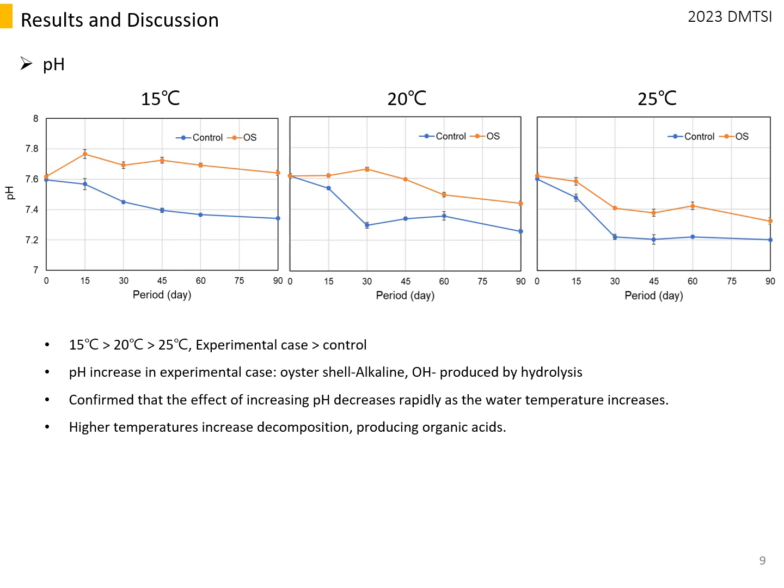In this study, pH appeared to stabilize by day 13. The higher the water temperature, the faster the pH decreased. This seemed to be a phenomenon occurring as higher temperatures cause the decomposition of organic matter to proceed more rapidly, producing organic acids.